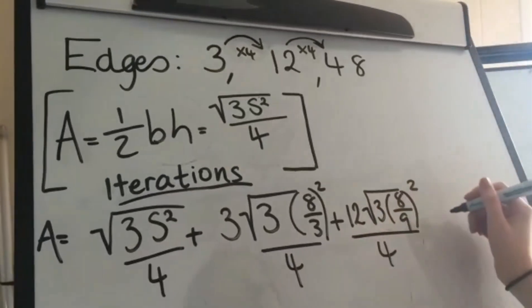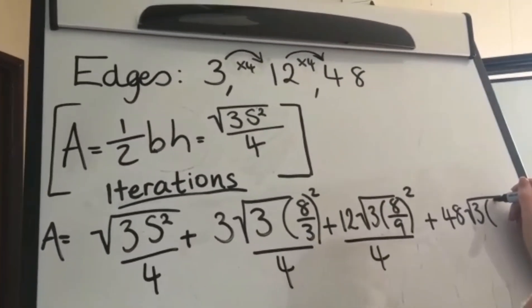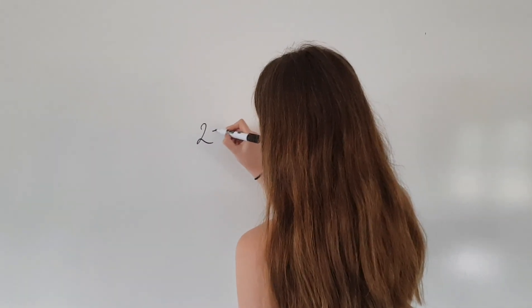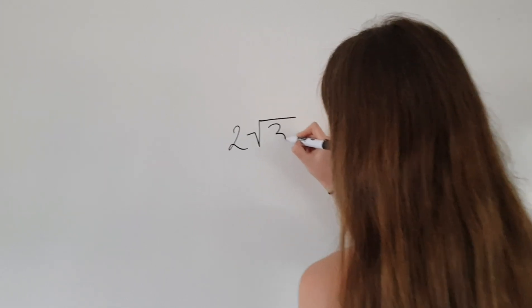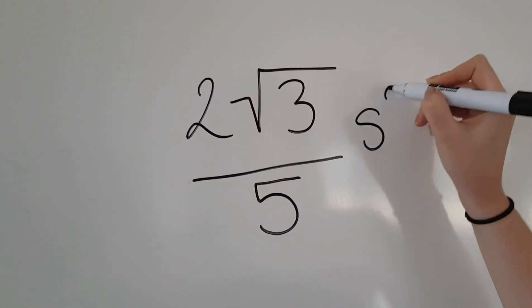As displayed in this formula showing how the area changes with the side length. Using method of simplification it shows that this equation assuming it continues infinitely cancels down to two times the square root of three divided by five times s squared where s is still the original side length. And this is the formula for the area.